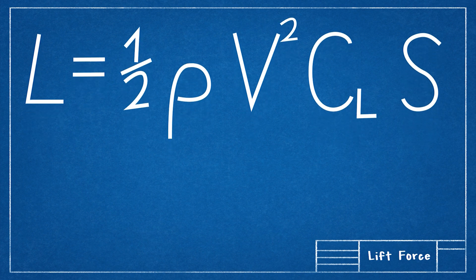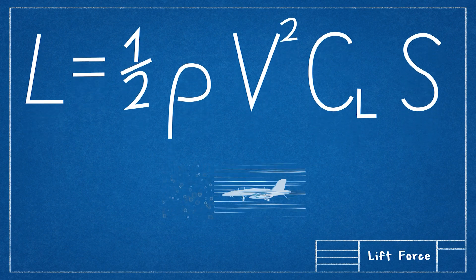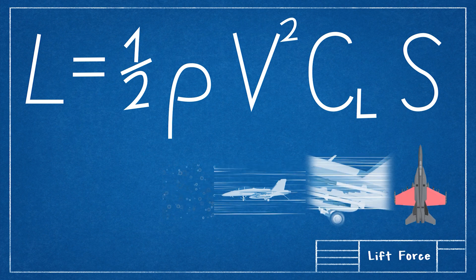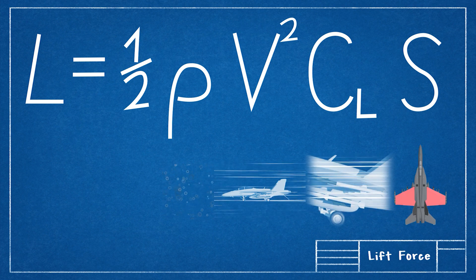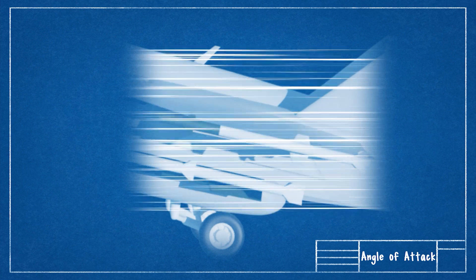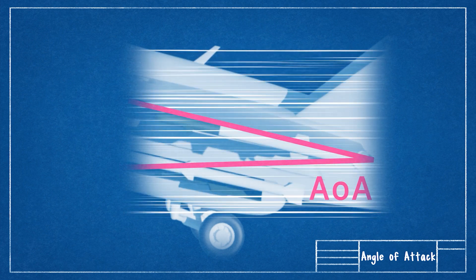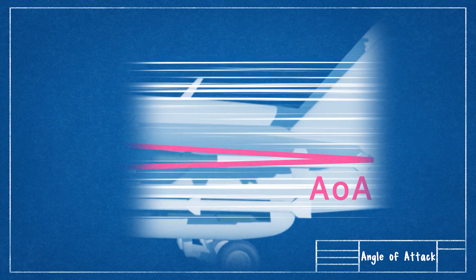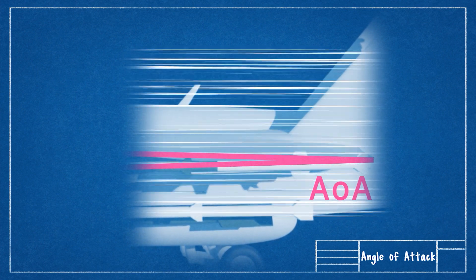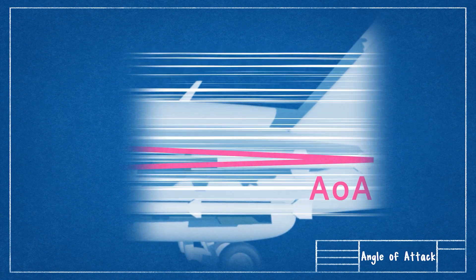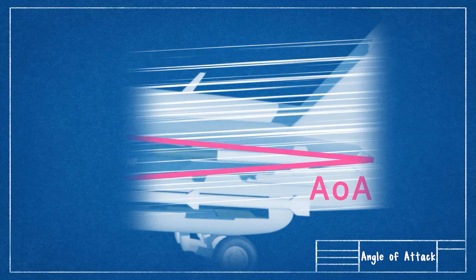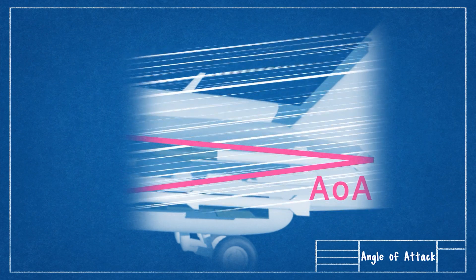Here's the lift force formula: Lift equals one half times air density, airspeed squared, the lift coefficient, and wing area. The lift coefficient is determined by the shape of the aircraft and its angle of attack — the angle between the relative airflow and the wing chord line. It is important to note that while they can be related, the angle of attack is not the same as aircraft pitch attitude.